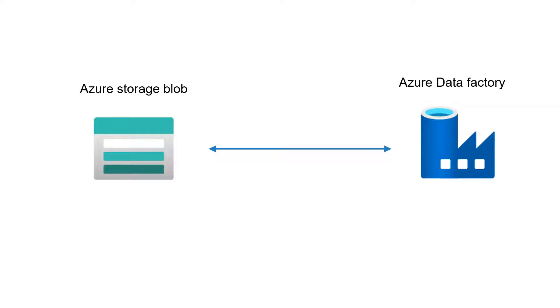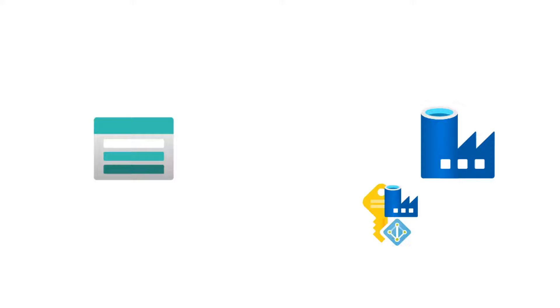To explain system assigned identity, I'm going to show an example where Azure Data Factory needs to read data from a Storage Account. Even if you have no Azure Data Factory knowledge, it's not a problem. Assume the storage account as the target. The first step is to enable system assigned identity in Azure Data Factory. Once enabled, an identity will be created for Azure Data Factory in Azure AD.